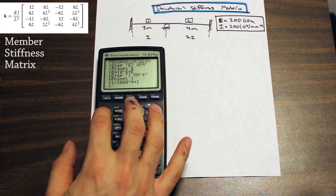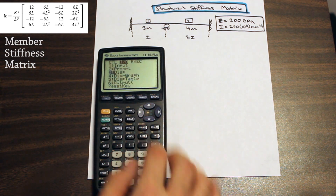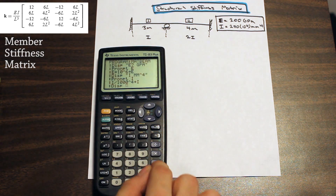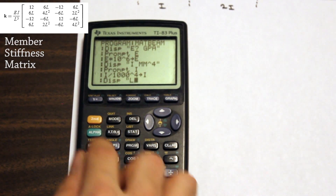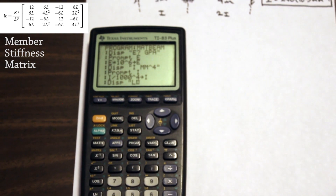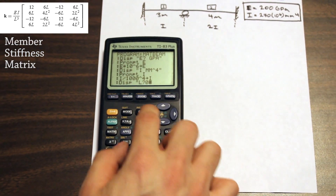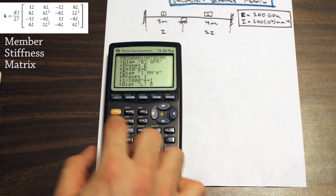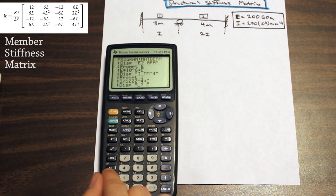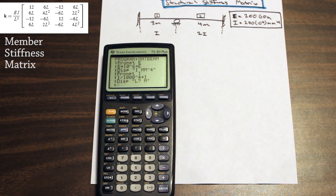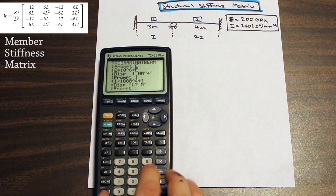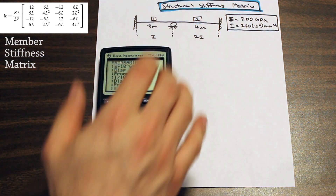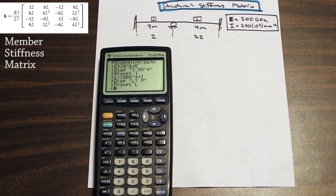Finally, we display a prompt for the length of the member — L — and specify that it's in meters. We prompt for L and store it. Since L is already in meters, no unit conversion is needed. Everything is now in kilonewtons and meters.